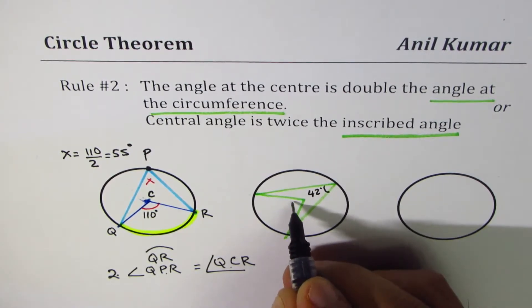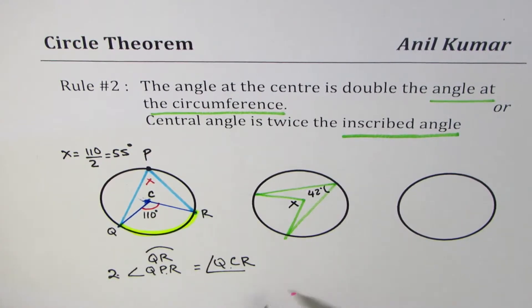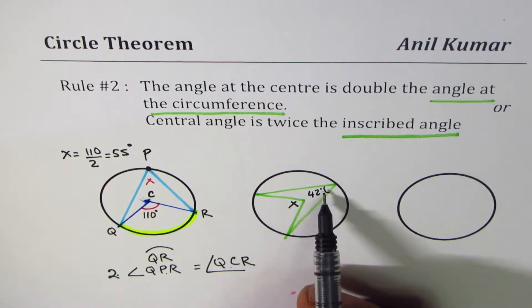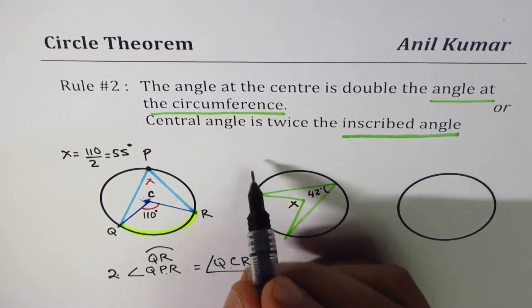Then what is the central angle? Let's say what is X here? Now, from the rule, it is very clear that it should be twice the inscribed angle. So in this case,